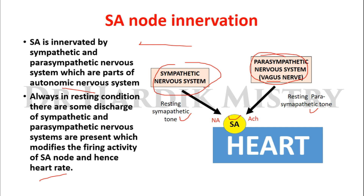The sympathetic nervous system acts on the SA node via the neurotransmitter noradrenaline, and the parasympathetic nervous system acts on the SA node via the neurotransmitter acetylcholine.